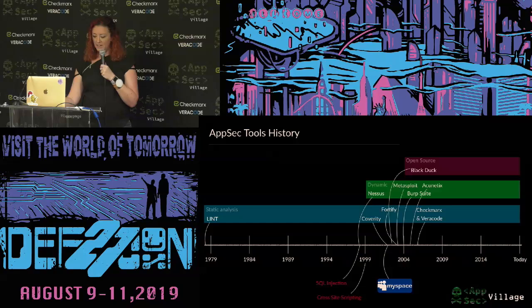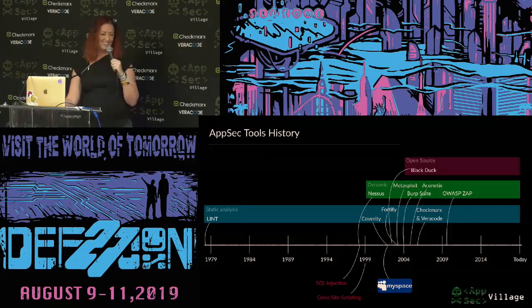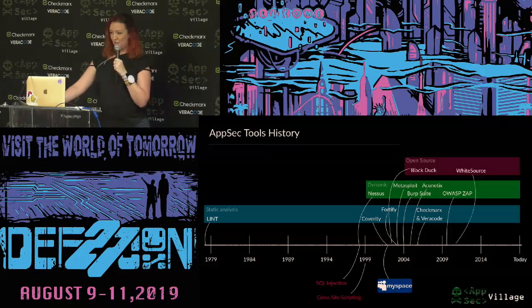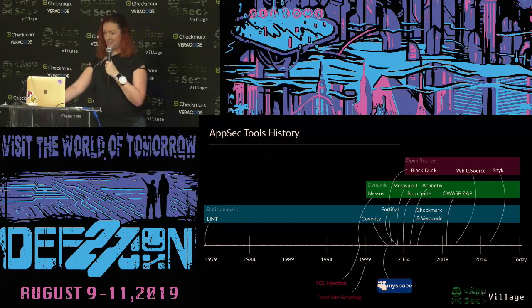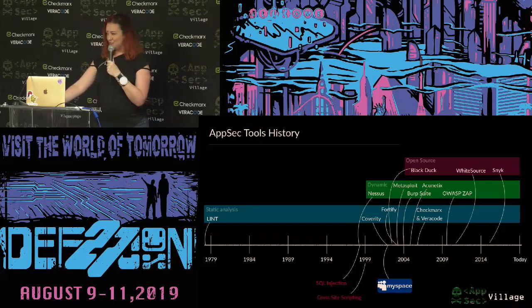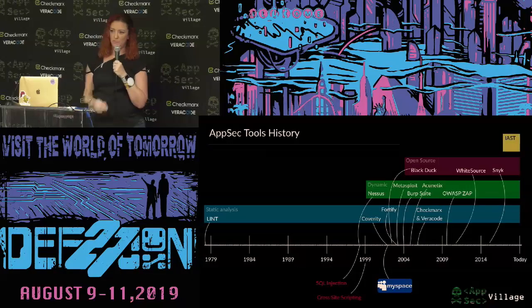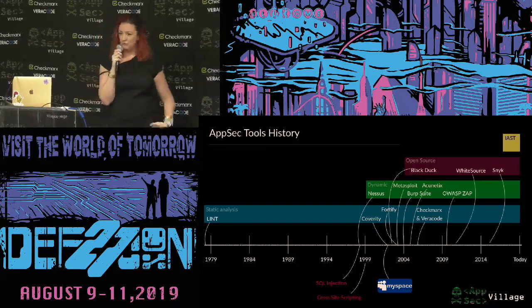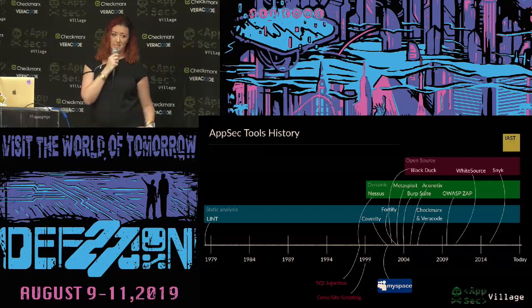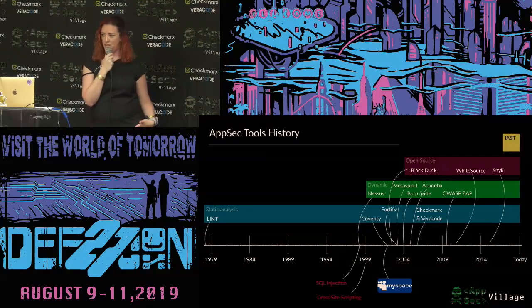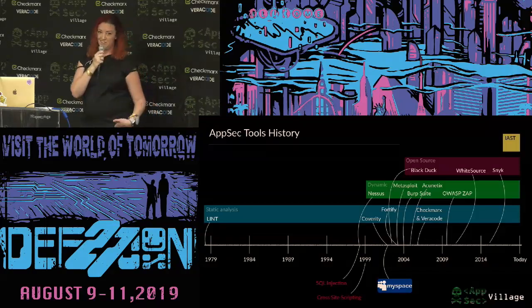We also got Acunetix, Checkmarx, and Veracode — our sponsors. OWASP ZAP came into existence, Whitesource — another sponsor — and Snyk. Also of note, in recent years there's something called IAST — interactive application security testing — it's another option. Since I haven't actually used those tools myself, I can't speak to it much. When I Googled IAST tools, Google was like 'did you mean SAST?' I was like, no, I did not. But thank you for the condescending suggestion.